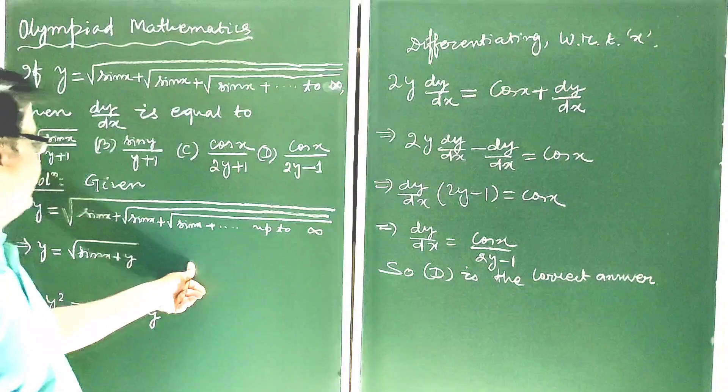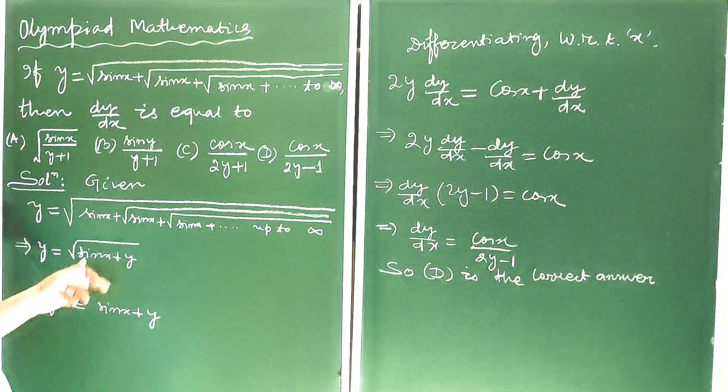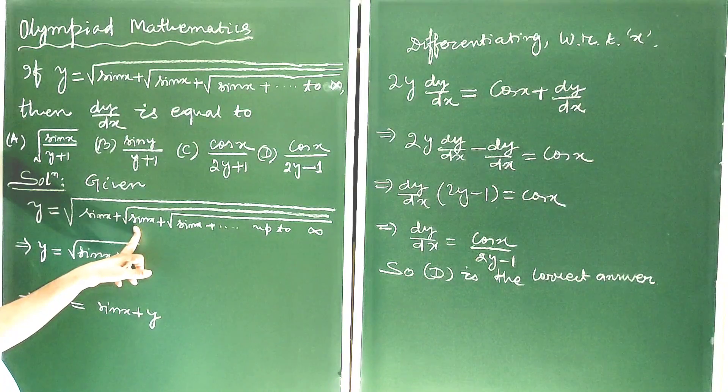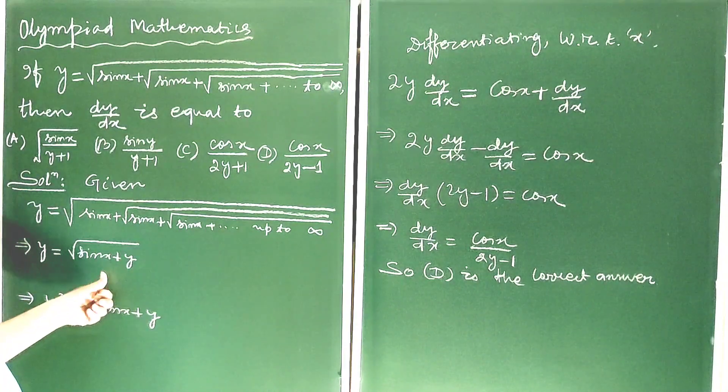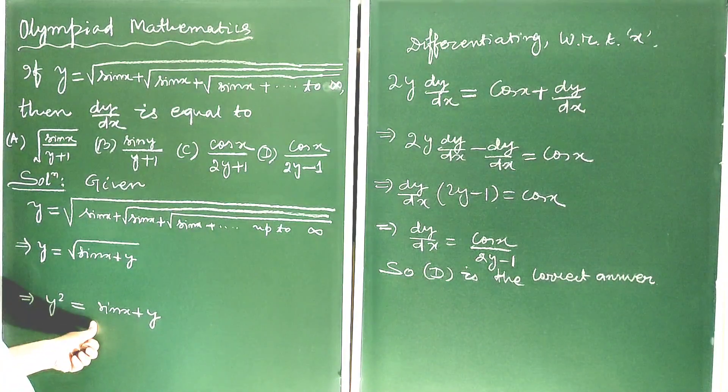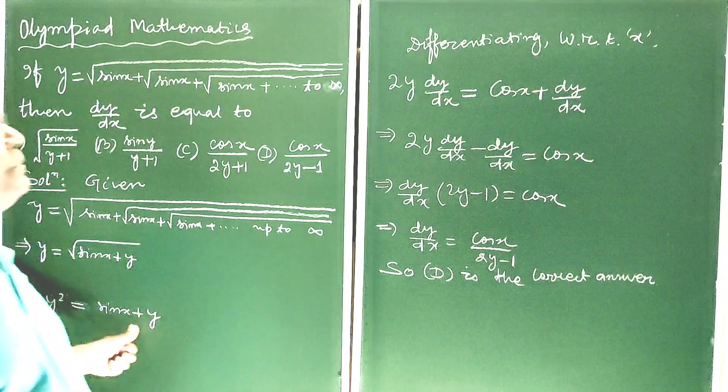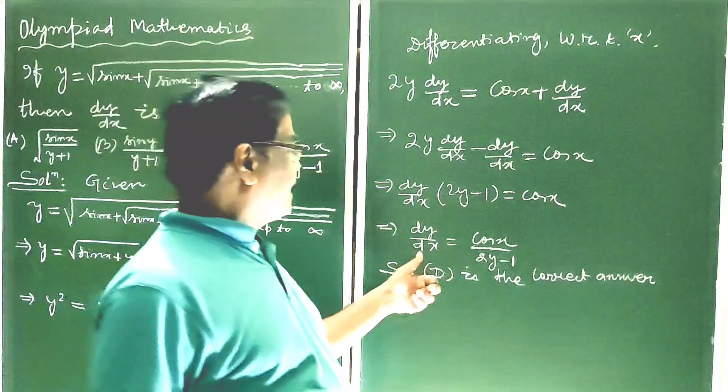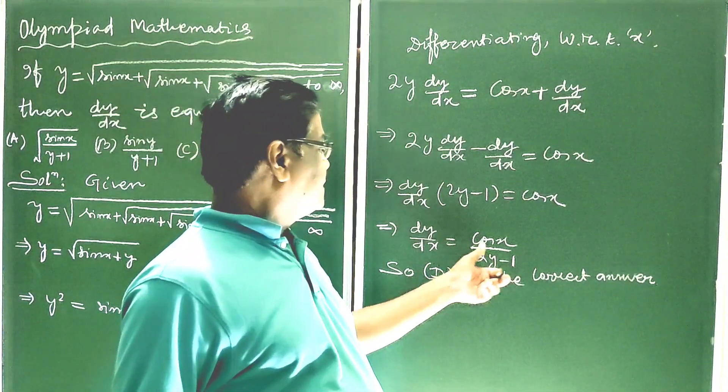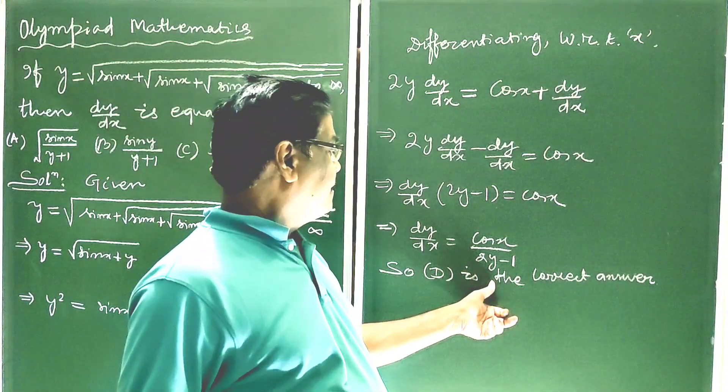So the question is very easy. Just we have to take y from the second term up to infinity. Then squaring both sides, we get y squared equals sin x plus y. Now differentiating, after simplification, we get dy by dx equals cos x by (2y minus 1). That is option B or D is the correct answer.